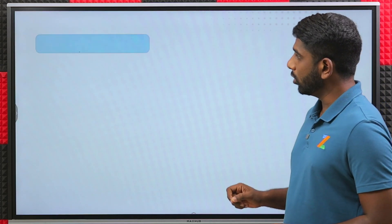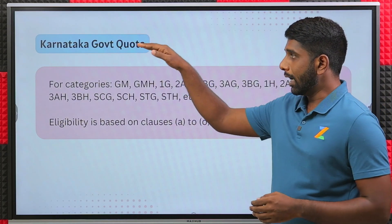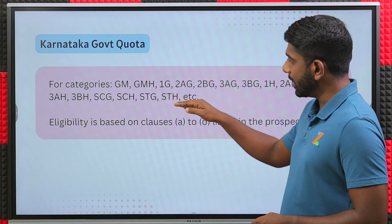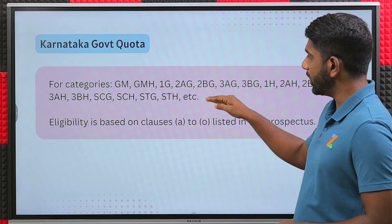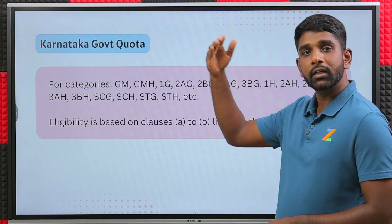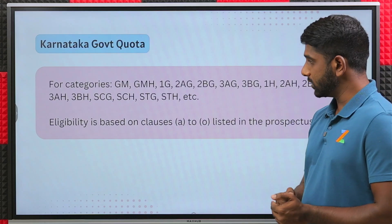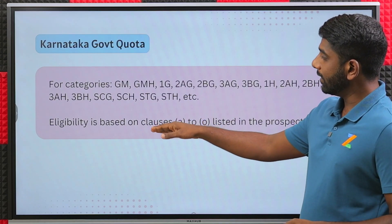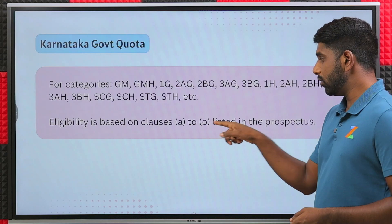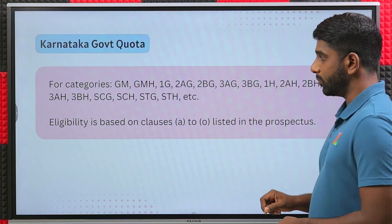The first quota is the Karnataka government quota. Under government quota there are different categories — GM, GMH, 1G, 2AG, etc. There are different categories that come under the Karnataka government quota. The eligibility for this is that candidates are eligible based on the clauses A to O listed on the prospectus.